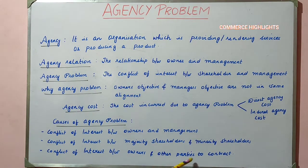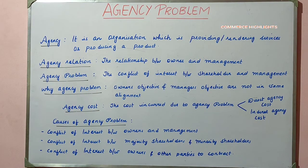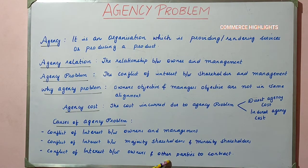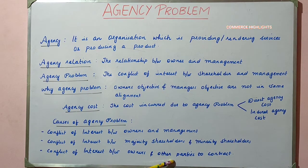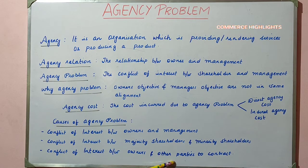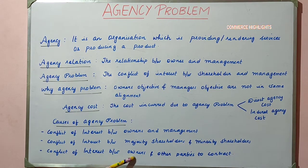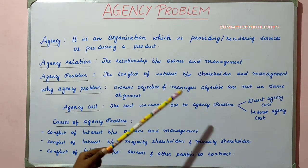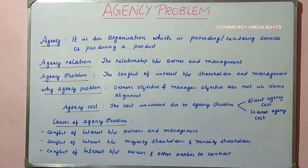The third cause is when there is any conflict of interest between the owners and other parties of contract. An organization may enter into contracts with creditors, auditors, suppliers, retailers, or the government. When there is any conflict of interest between the owners and these contracted parties, it gives rise to an agency problem.